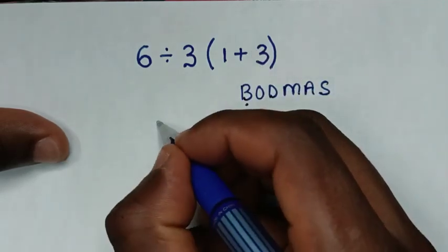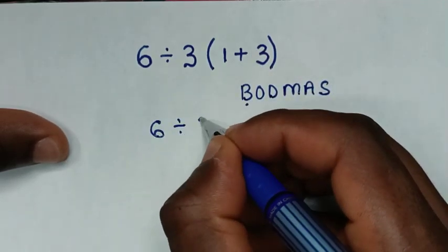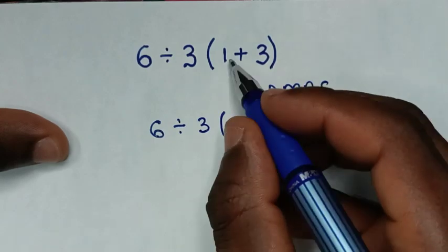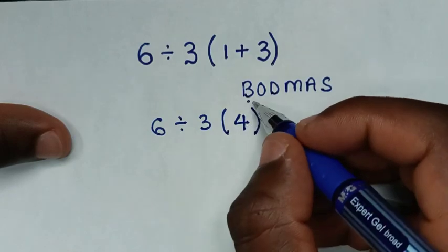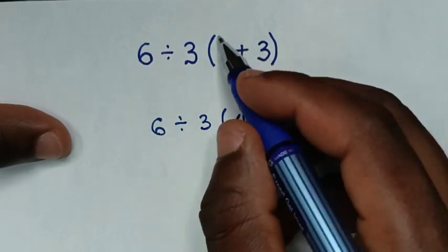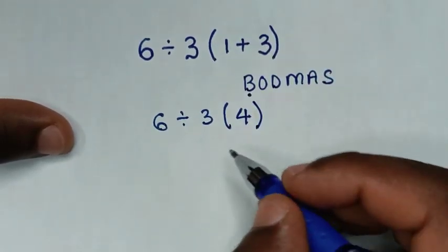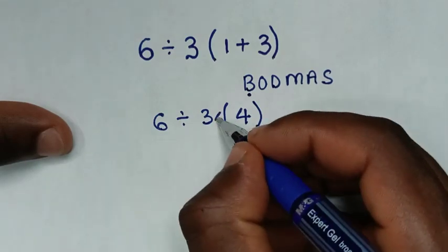So it will be 6 divided by 3 then bracket, this plus this is 4 bracket. Now after I deal with this bracket and its operation inside the bracket, between 3 and 4 in here we have multiplication.